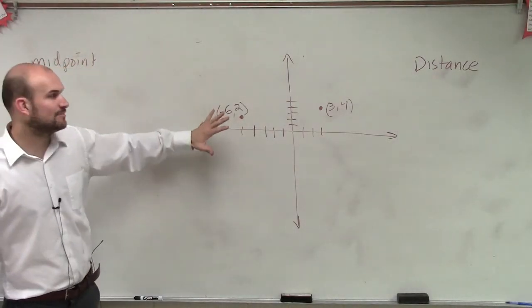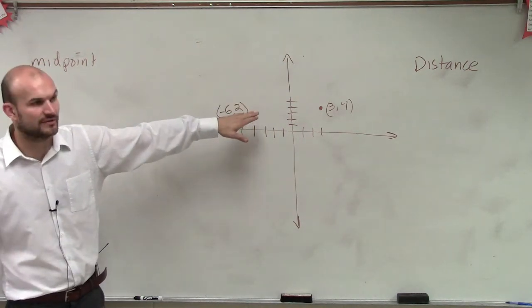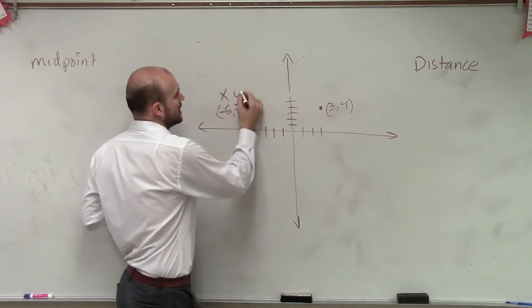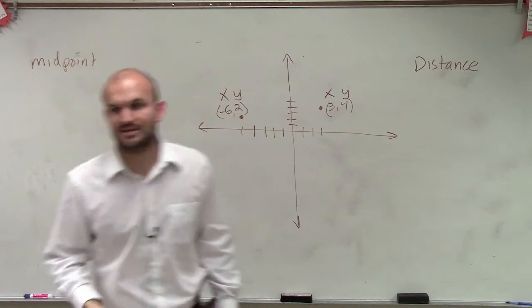So to find the midpoint and the distance, we have coordinate points for these points, right? We actually have values for them. But what I want you to understand is that you can also write these as x and y, correct?